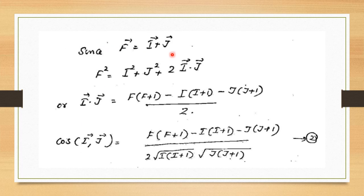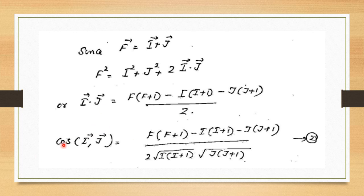Since f = i + j, we have f² = i² + j² + 2(i·j), so i·j = [f(f+1) − i(i+1) − j(j+1)] / 2. Also, i·j = |i||j|cos θ, giving cos(ij) = [f(f+1) − i(i+1) − j(j+1)] / [2√(i(i+1)) · √(j(j+1))].